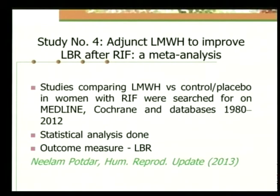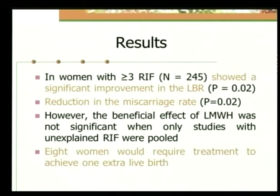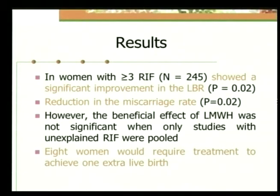The fourth study, by Neelam Pordhar published in Human Reproduction Update in 2013 — 'Adjunct Low Molecular Weight Heparin to Improve Live Birth Rate After Recurrent Implantation Failure: A Meta-Analysis' — collected studies comparing LMWH versus control or placebo from databases including Medline, Cochrane, and conferences from 1980 to 2012, with live birth rate as the outcome measure. In women with more than three recurrent implantation failures (245 women), they showed a significant improvement in live birth rate and a reduction in miscarriage rate. However, the beneficial effect of LMWH was not significant when only studies with unexplained recurrent implantation failure were pooled. A remarkable conclusion was that 8 women would need to be treated to achieve 1 extra live birth.